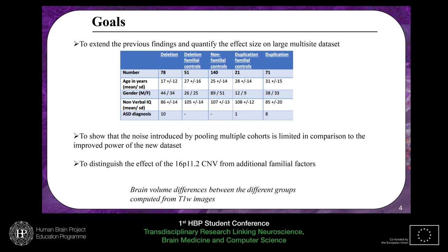Our last goal was to distinguish the effect of this 16p11.2 CNV from additional familial factors. We managed to decompose the control groups in order to compare the intrafamilial controls — meaning controls who don't carry the mutation but have one family member who does — against controls from the general population. The images I'm going to present show brain volume differences between the different groups, computed from T1-weighted images.